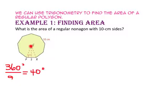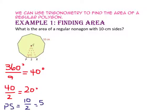The apothem divides the 40 degree vertex angle into two congruent 20 degree angles. It also divides one side into two congruent segments, so PS will have a length of 10 divided by 2, or 5 cm. We now have a right triangle with an angle measure of 20 degrees and a side length of 5.